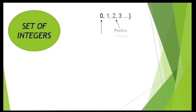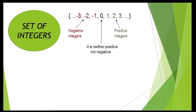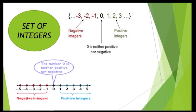On the number line, 0 is in the middle — neither positive nor negative. On the right side of 0, we have positive integers. On the left side of 0, we have the negative values. So, negative integers are to the left of 0 and positive integers are to the right.